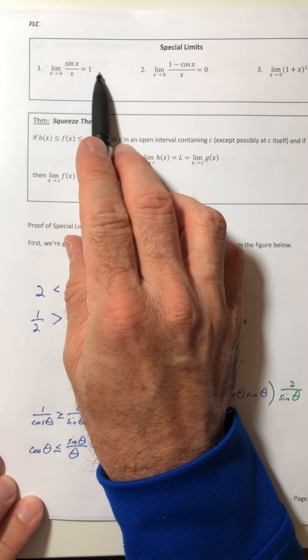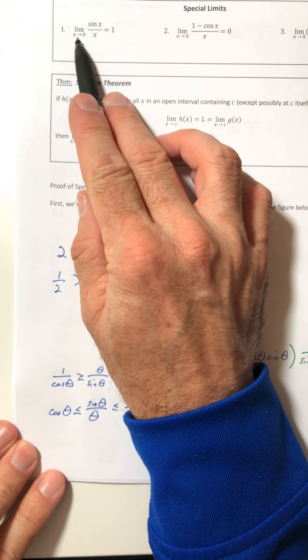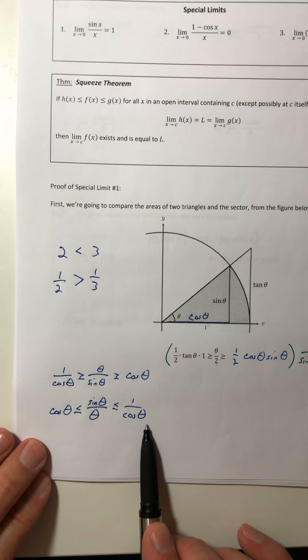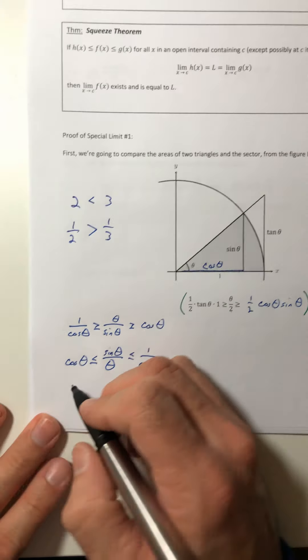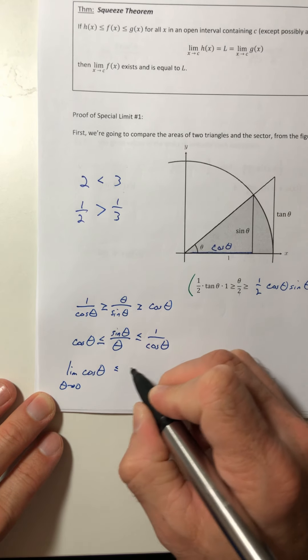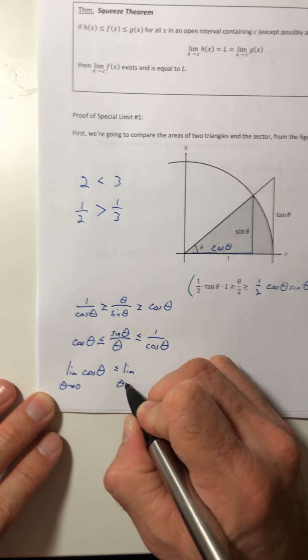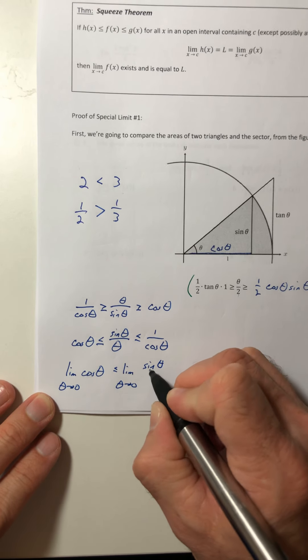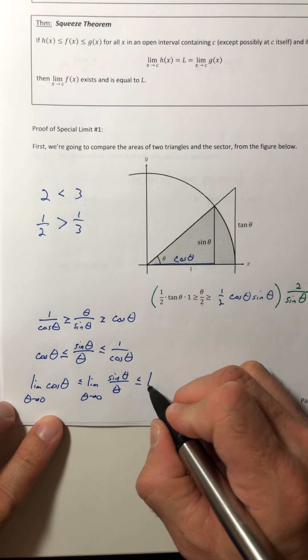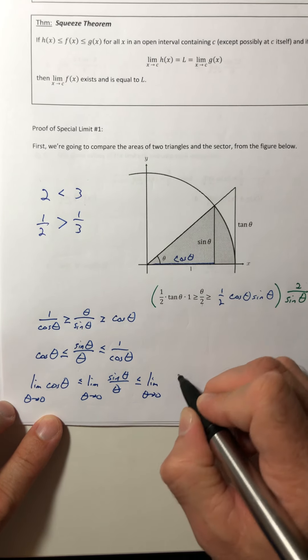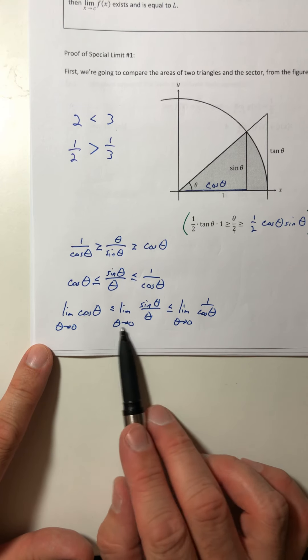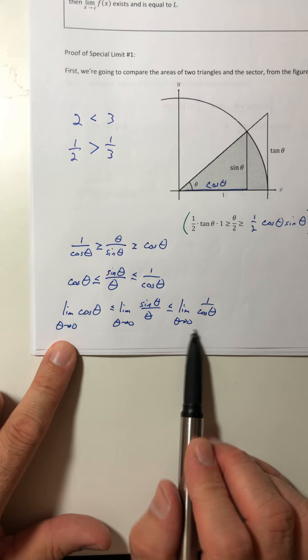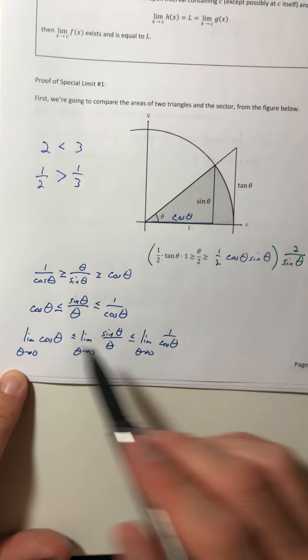Alright, so now we have that fraction that we were trying to head towards. So the only thing left to do is to slap a limit on it. So we're going to take the limit as theta approaches zero of everything. So the limit as theta goes to zero of cosine of theta is less than or equal to the limit as theta goes to zero of sine theta over theta. So I can't do anything with this middle one. That's what I'm trying to prove. But I can do something with the outer ones. I can plug in the zero for theta because what's cosine of zero?